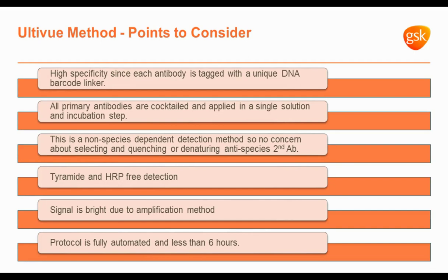Here are some advantages of the Outview method over conventional IHC. First, high specificity — since each antibody is tagged with a unique barcode, all primary antibodies are cocktailed together and applied in a single solution and incubation step, saving a lot of time. This technology is non-species-dependent, so you don't have to worry about selecting or quenching anti-species secondary antibodies. It is tyramide- and HRP-free, so background is relatively low due to the absence of endogenous peroxidase. The signal is amplified and very bright. The protocol is fully automated on Bond RX and the whole process can be completed in less than six hours.